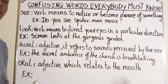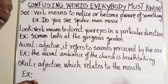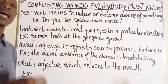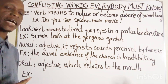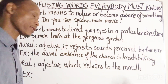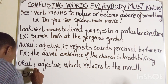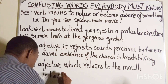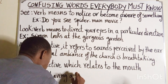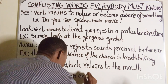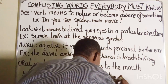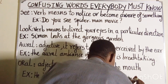And finally, 'oral', spelled O-R-A-L, is also an adjective which relates to the mouth — meaning speaking rather than writing. Let's get an example: 'He is having an English oral examination now.'